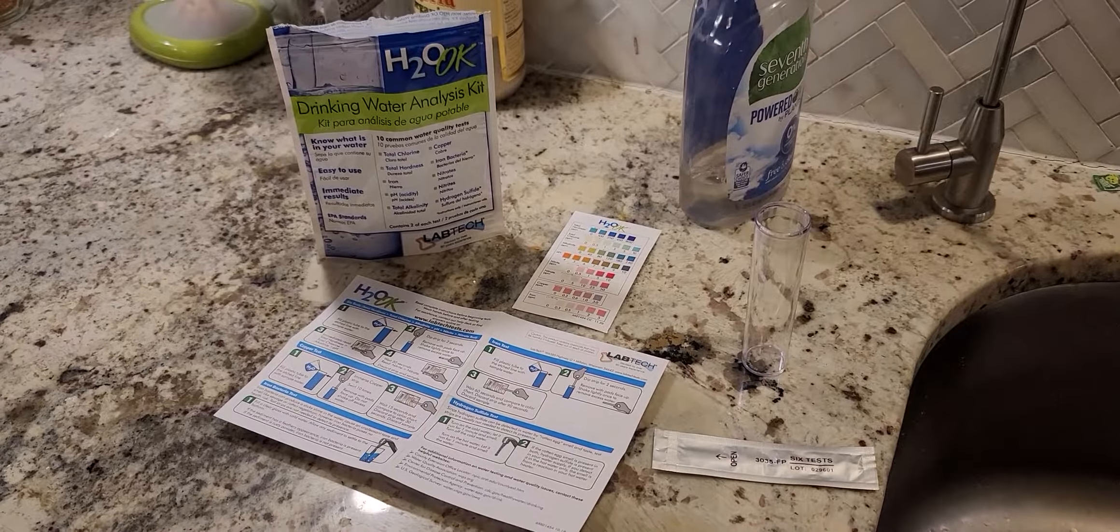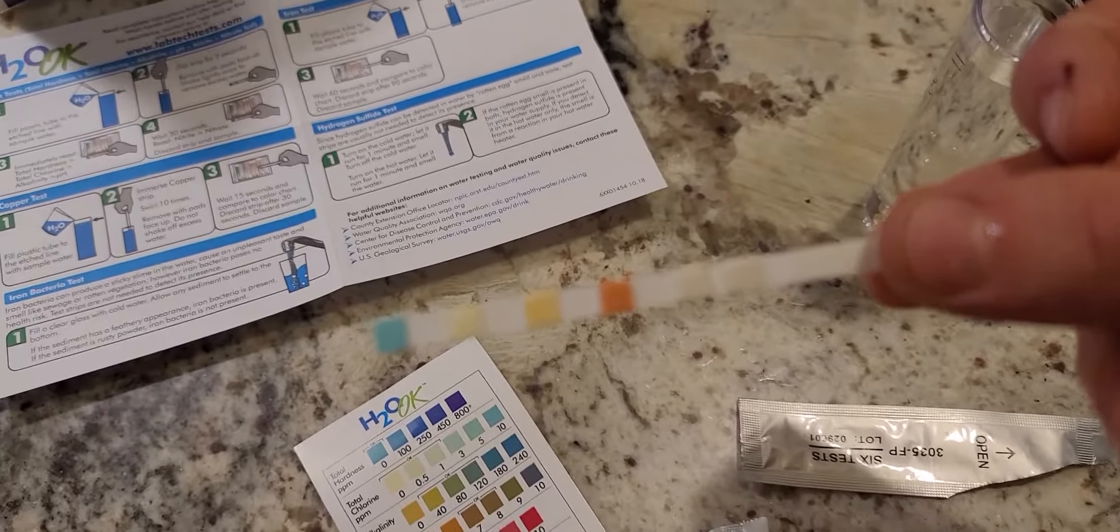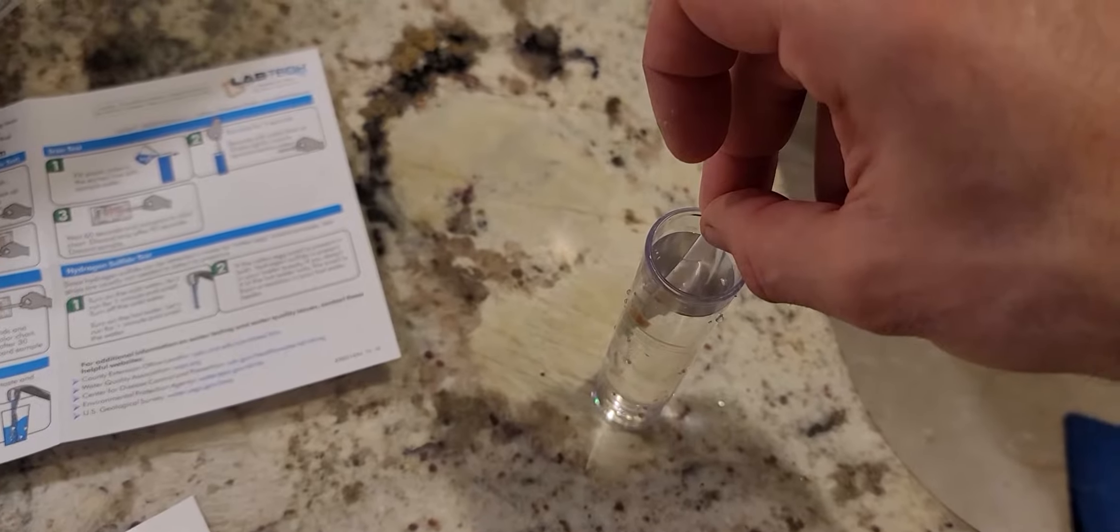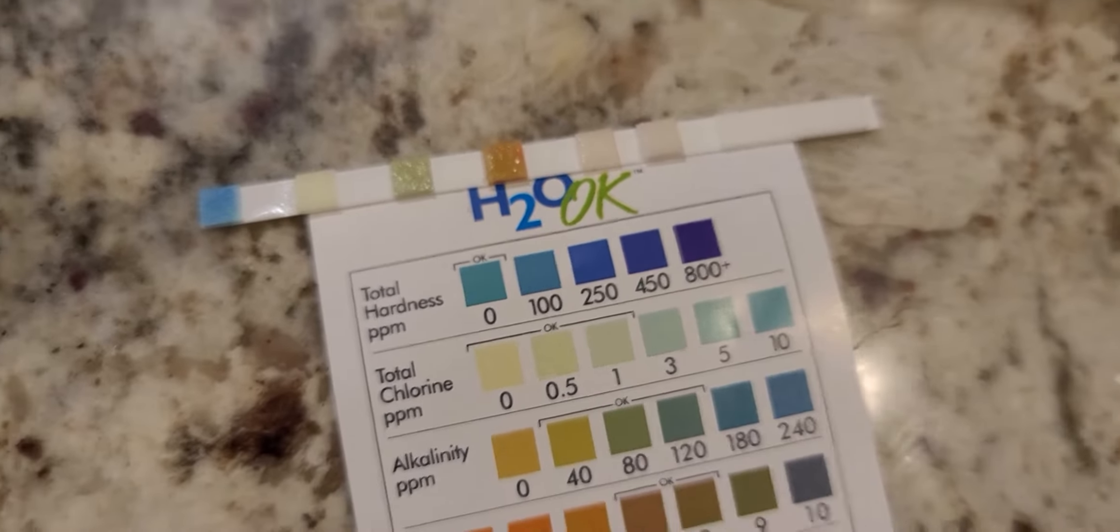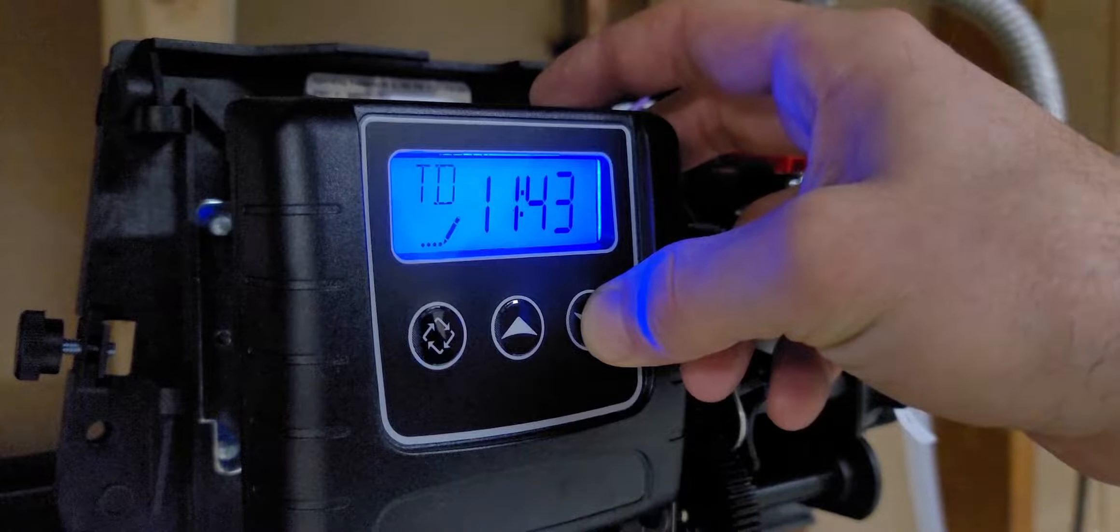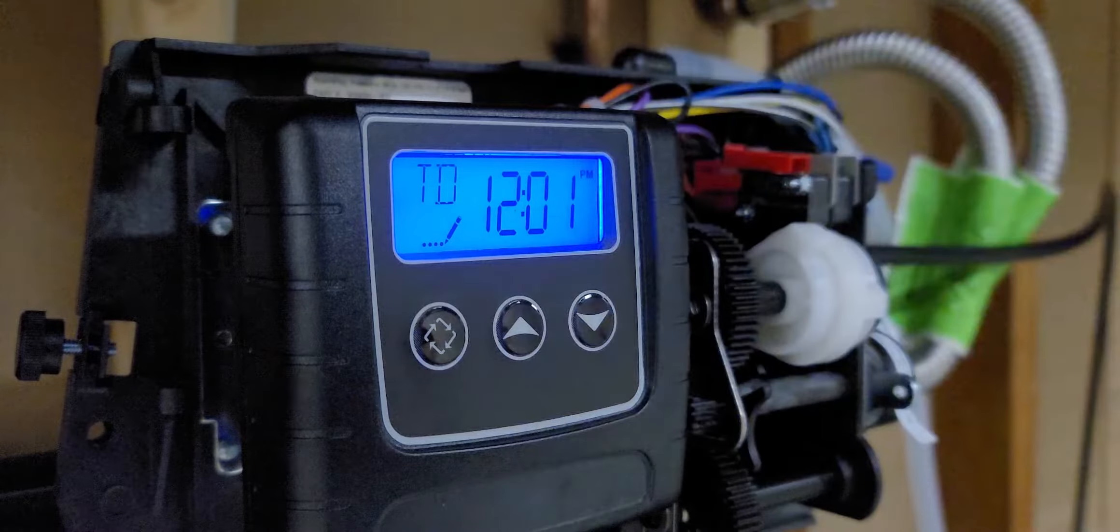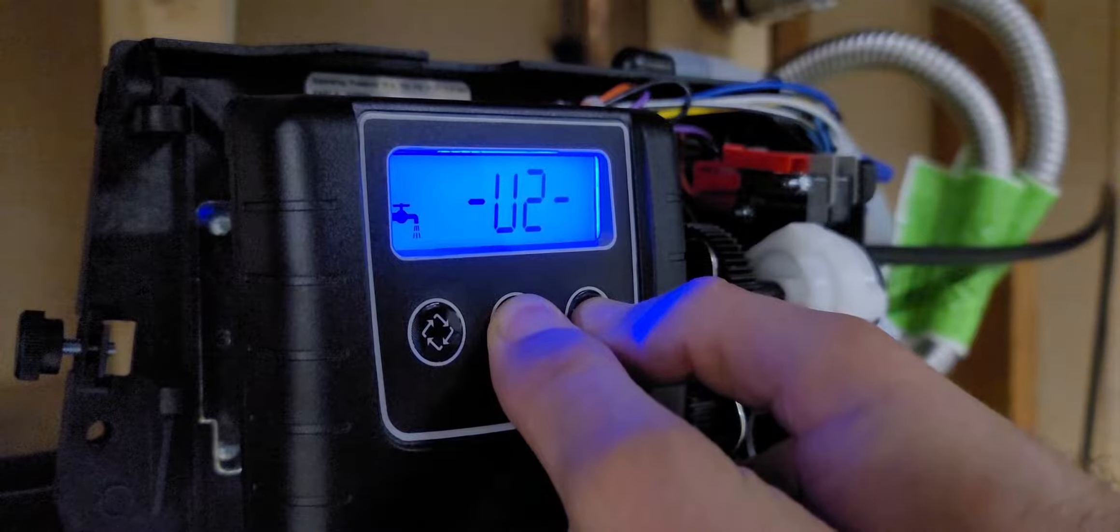Next, you're going to want to test your water supply for hardness, because you're going to have to program the hardness into your controller. So my hardness is between 100 and 250 parts per million, which I had to then convert to grains per gallon or something like that. Just look it up online. You'll be able to find a conversion.